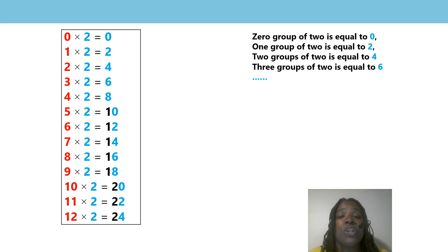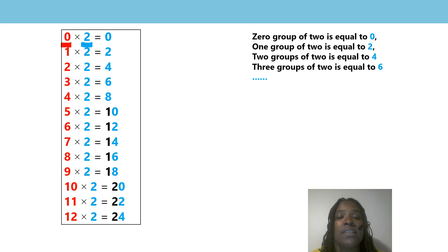Let's look at our two times table again. But before we continue, can you remind me — what does our first factor represent? That's right, our first factor represents the number of groups. What does our second factor represent? That's right, our second factor represents the group size, and it is always 2.